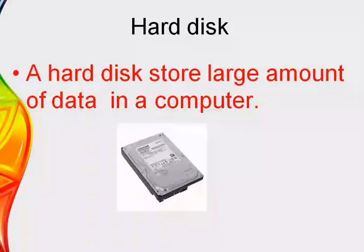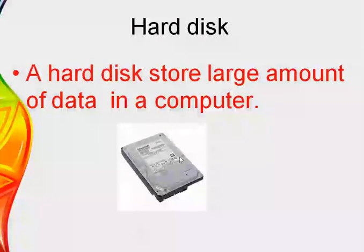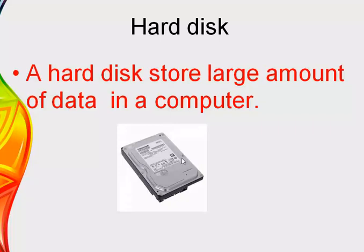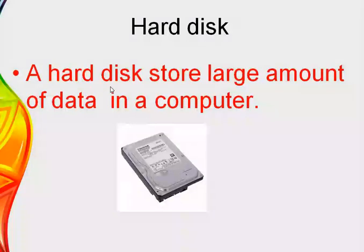CPU stands for Central Processing Unit. The hard disk is inside our CPU cabinet and it can store a huge amount of data. It is a data storage device. The capacity of a hard disk is measured in gigabyte (GB) or terabyte (TB). Simply, a hard disk is used to store a large amount of data in a computer.